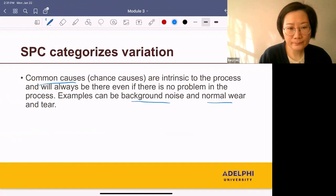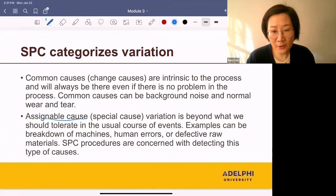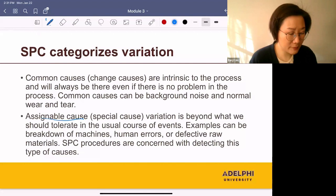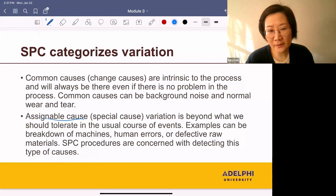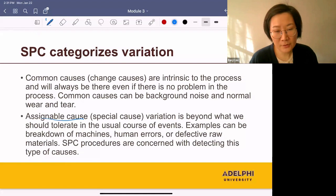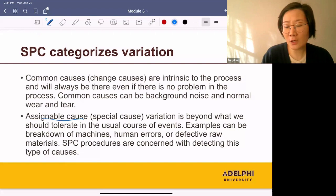Next, assignable causes are beyond what we should tolerate in the usual course of events. Examples include machine breakdowns, human errors, or defective raw materials. In SPC, procedures are concerned with detecting this type of cause, also called special causes.